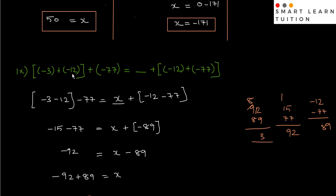Next, 9th sum: minus 3 plus minus 12 plus minus 77 equals to dash. First step: open all brackets. Plus into minus is minus, so minus 77. Again, this bracket — plus into minus is minus — so minus 77. Open bracket: minus 3 minus 12. 3 plus 12 is 15, so minus 15.